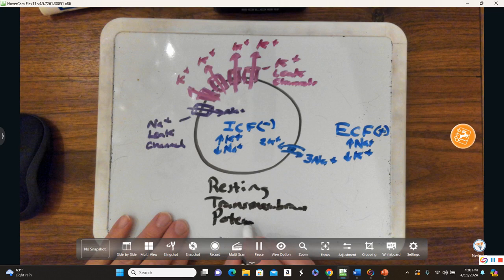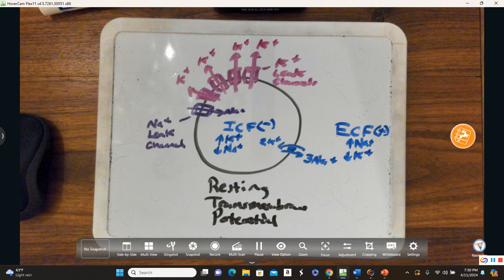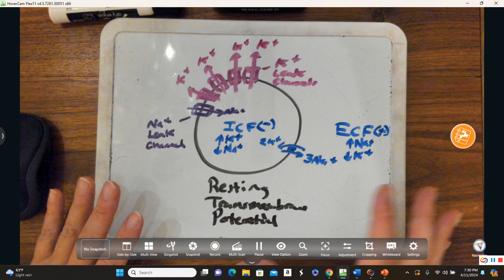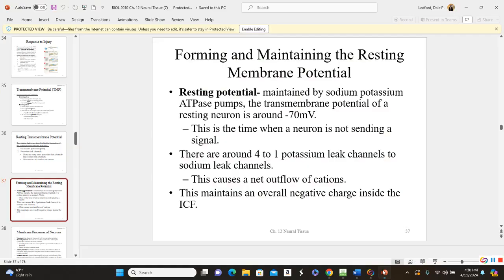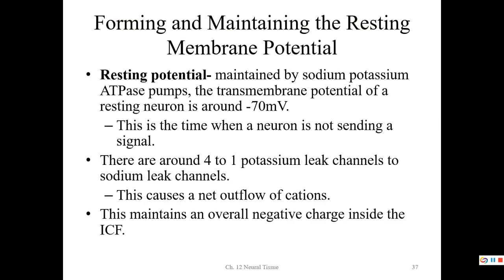A resting TMP — resting transmembrane potential — keeps the cell resting, not sending any signals. The resting potential is maintained by the pump. There are about four-to-one potassium leak channels to sodium leak channels, which causes a net outflow of cations and maintains an overall negative charge in the ICF.